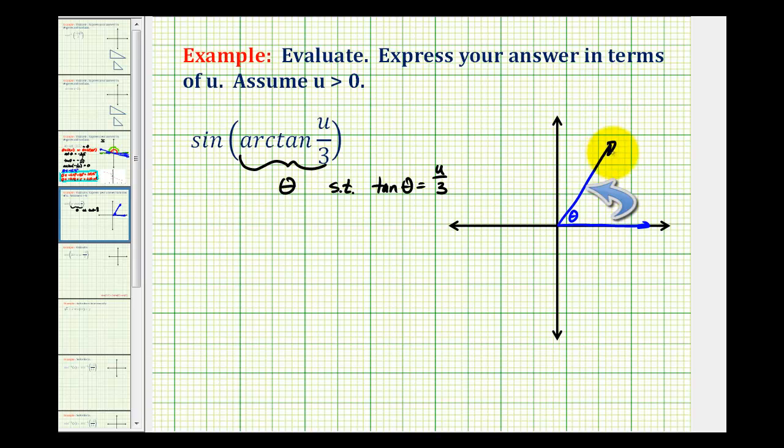So if we sketch the reference triangle, dropping a perpendicular, the length of the opposite side would be u, the length of the adjacent side would be three.